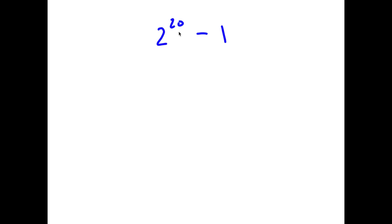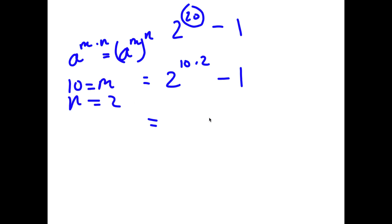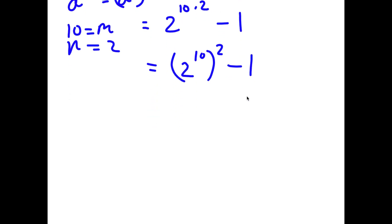In this problem I have 2 to the power of 20 minus 1. To solve this I'm going to rewrite 20 as 10 times 2, so I have 2 to the power of 10 times 2 minus 1. Using the rule that a to the power of m times n equals a to the power of m to the power of n, I can write this as 2 to the power of 10, to the power of 2, minus 1. Now 1 here is just 1 to the power of 2, since 1 to the power of any number is simply 1.